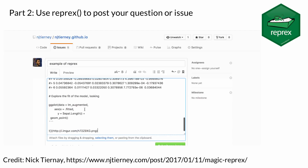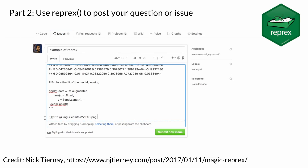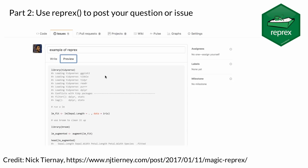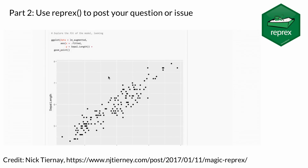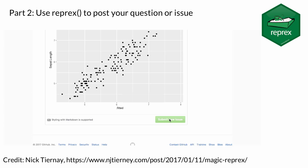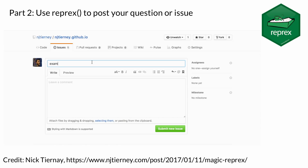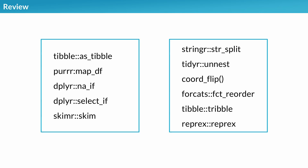Then we can use reprex to post your question or issue. In this case, we see an example where you've posted it on GitHub — maybe to file a bug report with a package. The nice thing is it formats your code, includes any plots, and makes it really easy to submit your issue just by copying it. So this is just an overview of what we went through today — about 11 functions. There are so many more, not just packages but functions within packages, like dplyr, which many people don't realize the depth of.